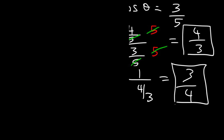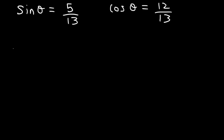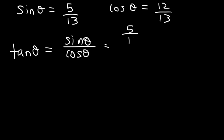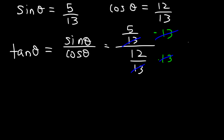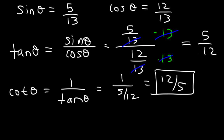That's the fastest way to get cotangent once you have tangent. Now let's say that sine theta is equal to 5 divided by 13 and cosine theta is 12 divided by 13. Find the values of tangent and cotangent. Tangent theta is going to be equal to sine divided by cosine, so sine is 5 over 13 and cosine is 12 over 13. Let's multiply the top and the bottom by 13 — these will cancel — giving us 5 over 12. Then cotangent is simply 1 divided by tangent, which is 1 over (5/12), and that becomes 12 over 5.